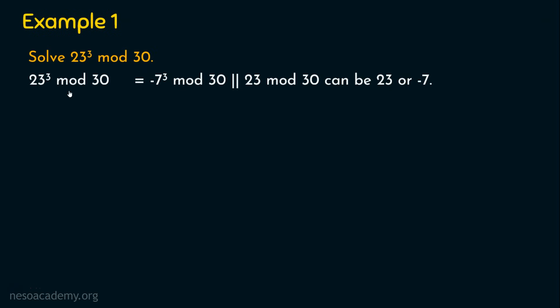As mentioned in the previous lecture, there are multiple ways to approach a problem. You can prefer any approach, but please ensure that the mathematical fundamentals are completely followed. We have 23 power 3 mod 30. I can simplify the base with a smaller number — simply consider 23 mod 30, which gives 23 or minus 7. I am replacing 23 with minus 7, because 23 mod 30 can be 23 or minus 7, and minus 7 is the smaller value.